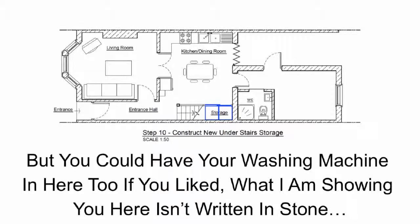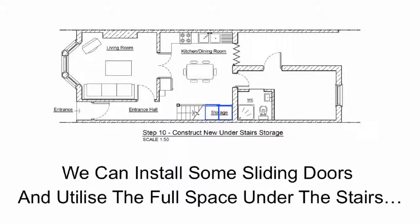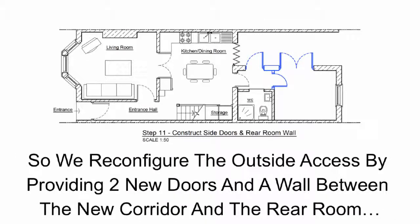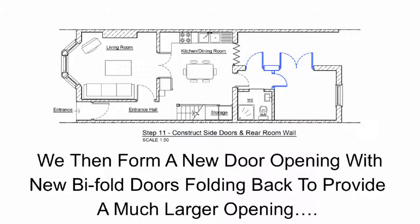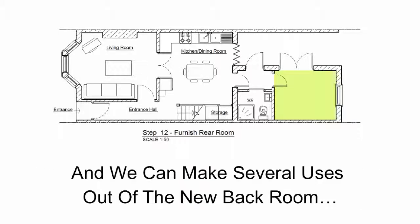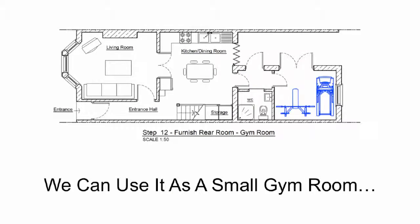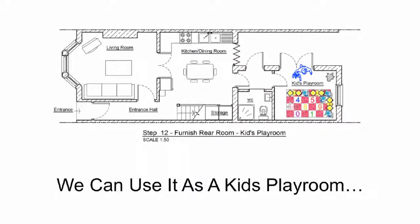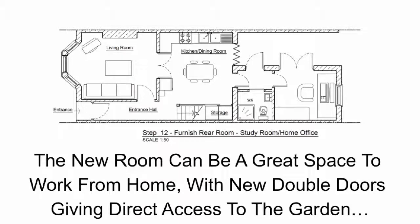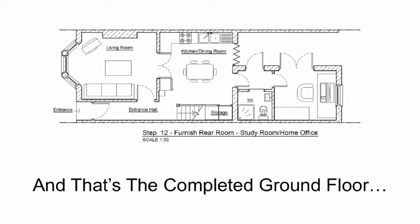What I am showing you here isn't written in stone. With step 11 we want to create a separation between the back room and the bathroom along with the access to the garden. We reconfigure the outside access by providing two new doors and a wall between the new corridor and the rear room, then form a new door opening with new bifold doors folding back to provide a much larger opening with direct access to the outdoor terrace and garden. The final step of the ground floor is step 12 — we furnish the rear room. We can make several uses out of it: an extra bedroom, a small gym room, a kids' playroom, a study or home office — pretty much any way you want. The new room can be a great space to work from with new double doors giving direct access onto the garden. And that's the completed ground floor.